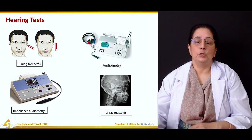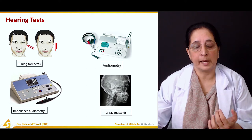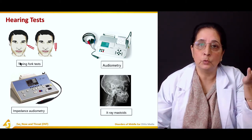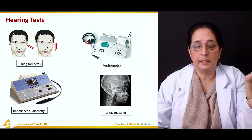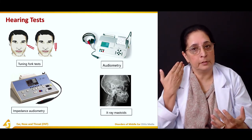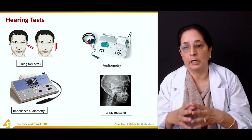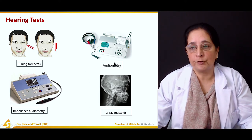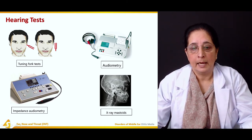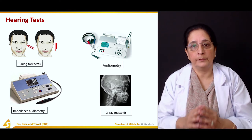Hearing tests are performed to assess the degree of hearing loss. These include tuning fork tests — the Weber test and Rinne's test — where the tuning fork is vibrated and placed on the bone and in front of the ear. Air conduction is usually greater than bone conduction. Audiometry, X-ray of the mastoids, and impedance audiometry are also performed.